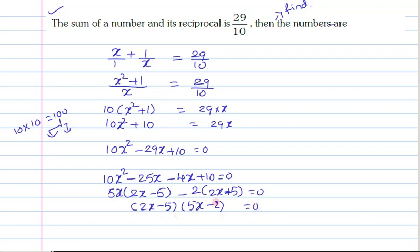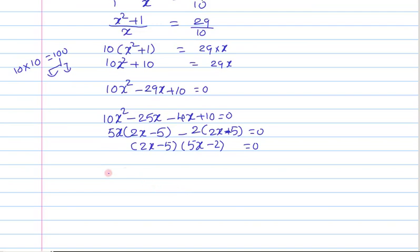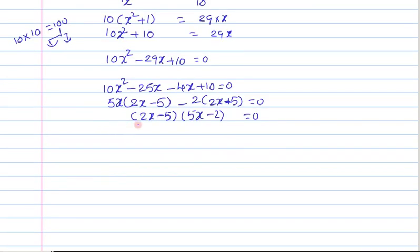Now, product of these two numbers is 0 means definitely any one of them is equal to 0. That means either 2x minus 5 is equal to 0 or 5x minus 2 is equal to 0. From this, x is equal to 5 by 2 or x is equal to 2 by 5.